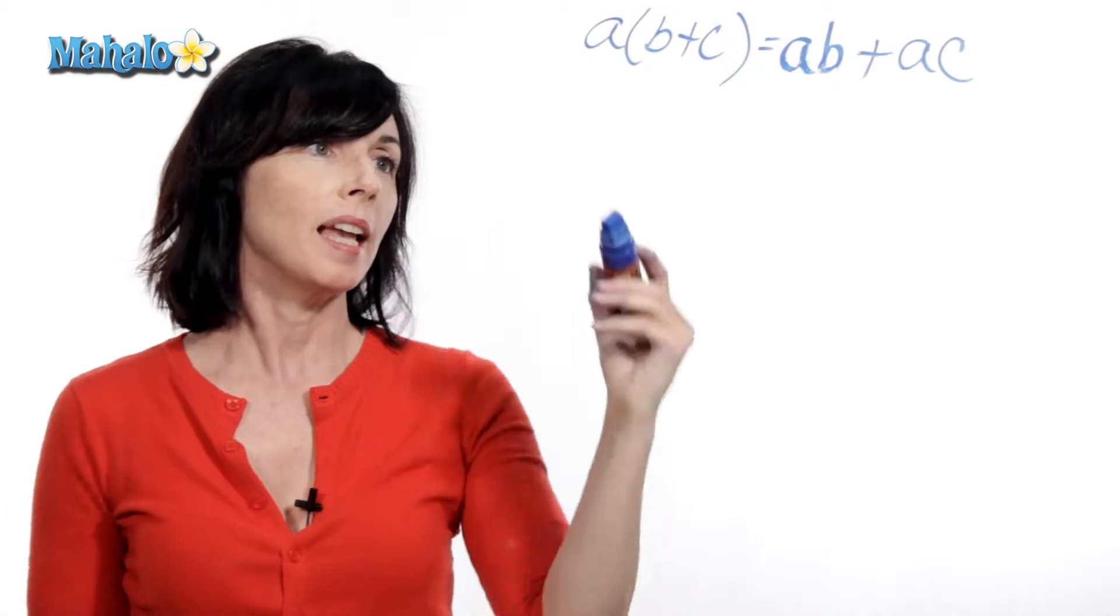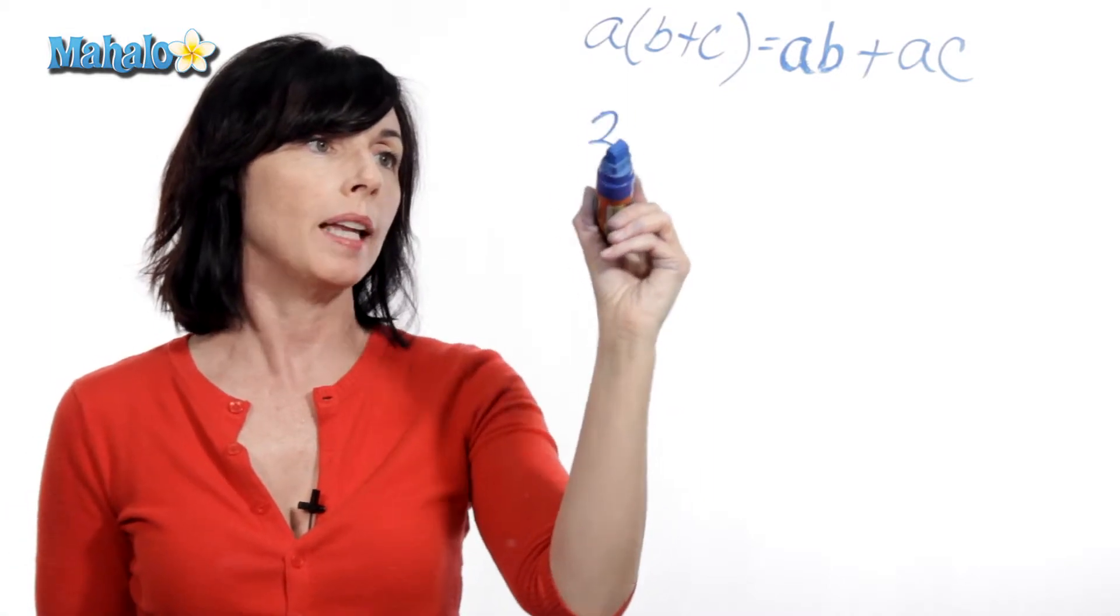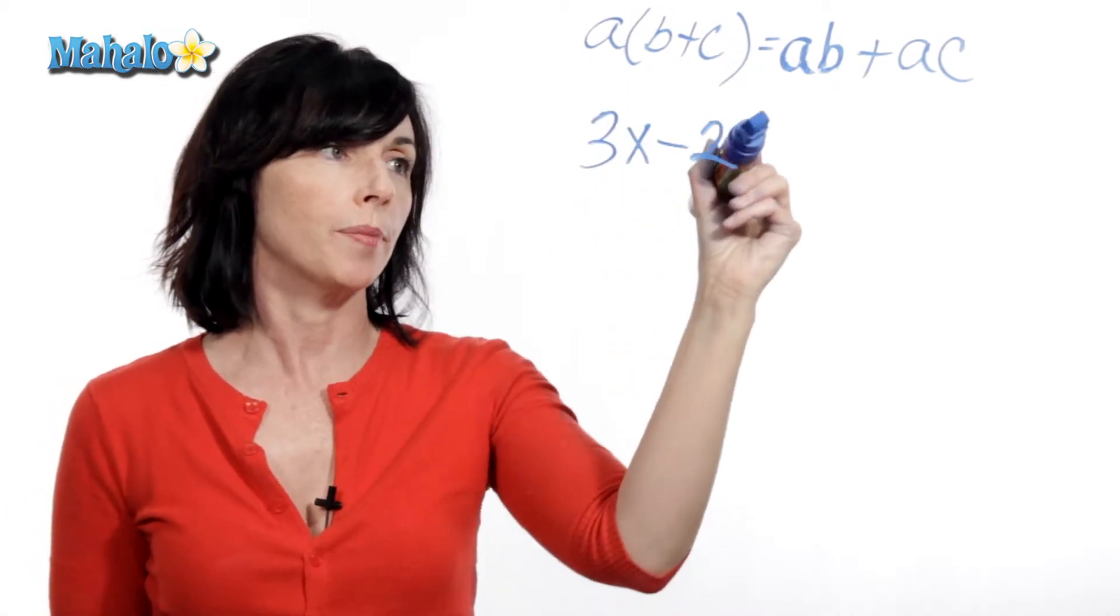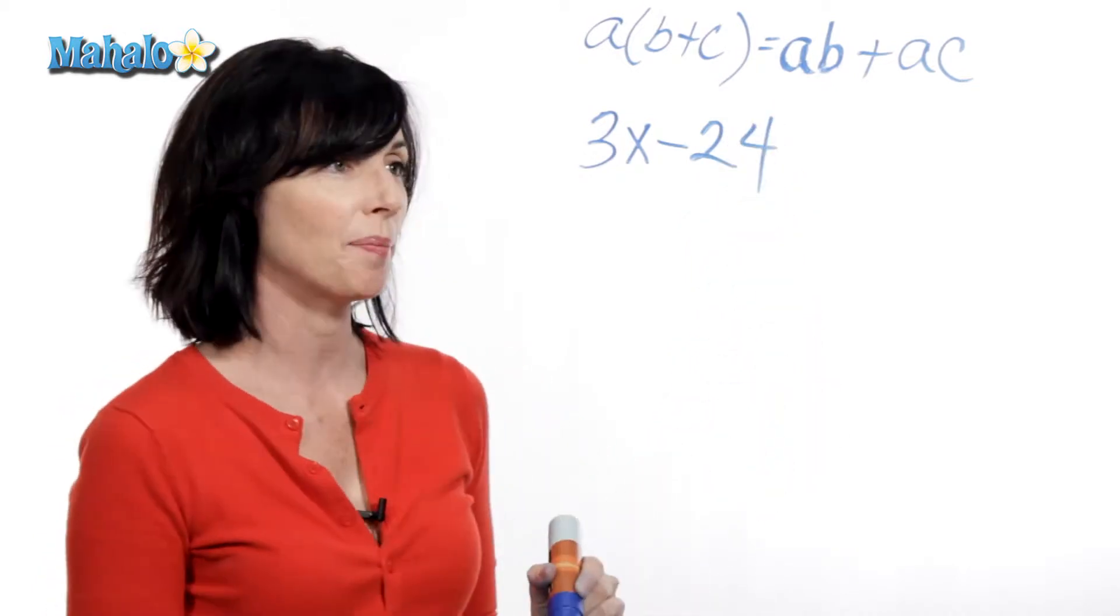So let's look at an example. Let's say we have 3x minus 24. So we're doing an algebraic example today.